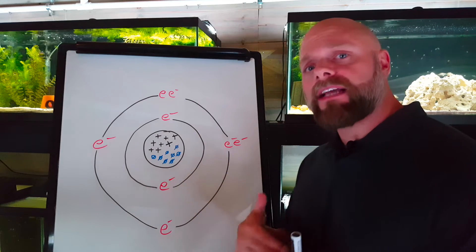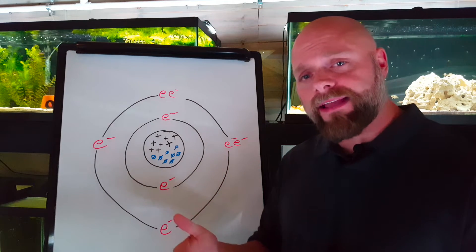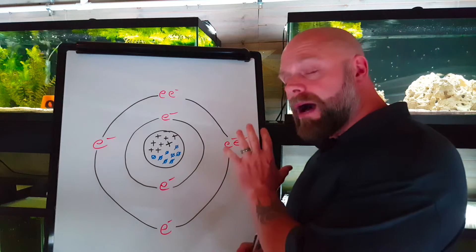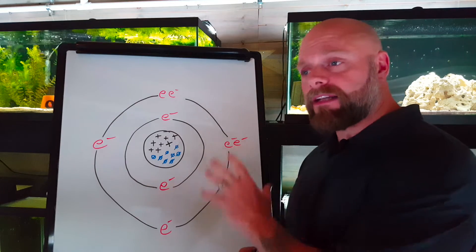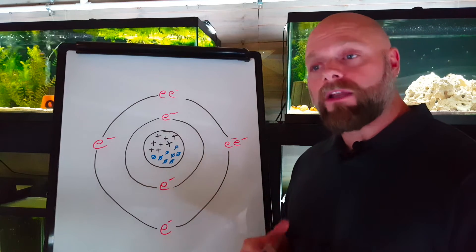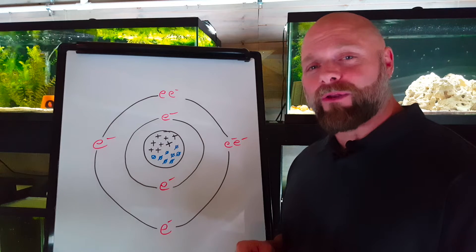This is the general structure of an element, and this is going to become important because as we start to understand and talk about pH, knowing how protons, neutrons and electrons are structured in an element, knowing where they're found is going to help us out a little bit in a few minutes.